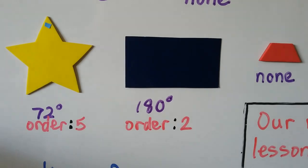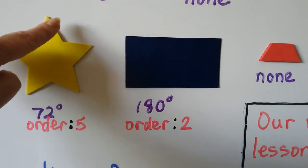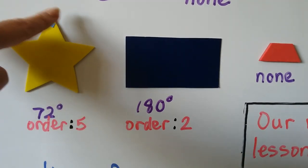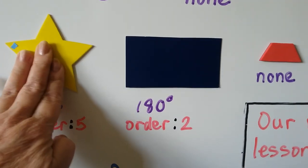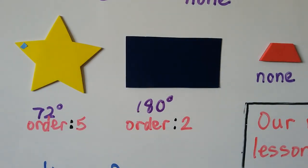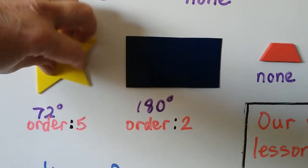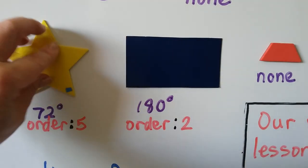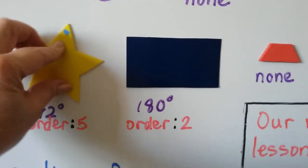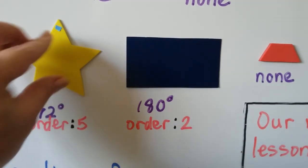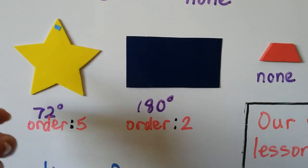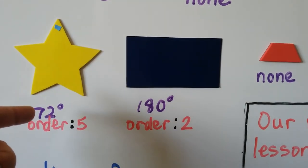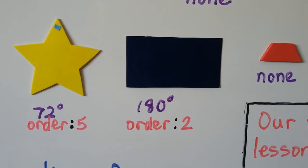This 5-point star would just be like our pink flower. I put a little dot on the top here so we remember where the top was. I can rotate it 72 degrees and it's got the same orientation. I can do it 2, 3, 4, 5 times. It's got 5 lines of symmetry, I can rotate it 5 times at 72 degrees each time — it's got an order of 5.